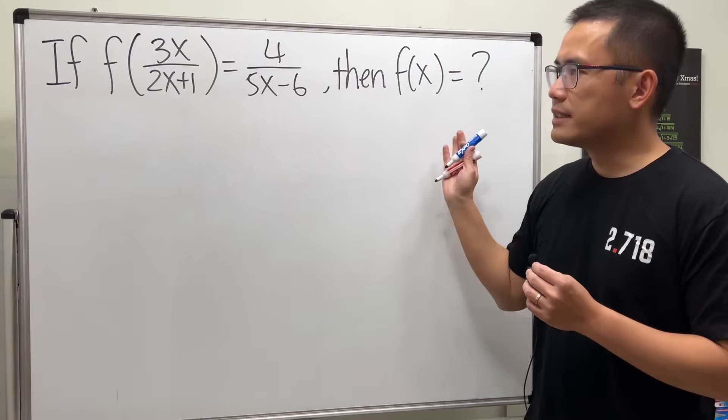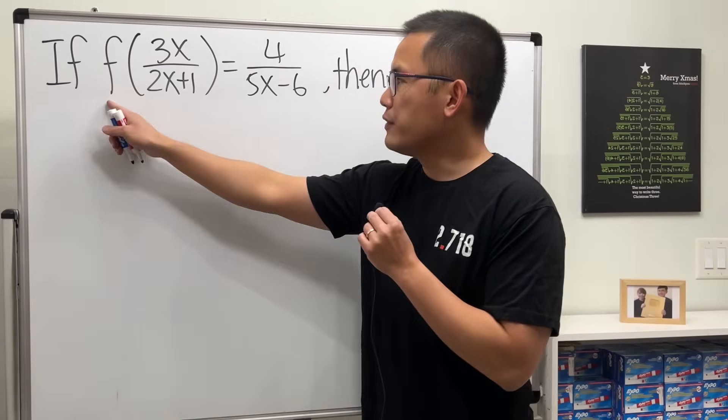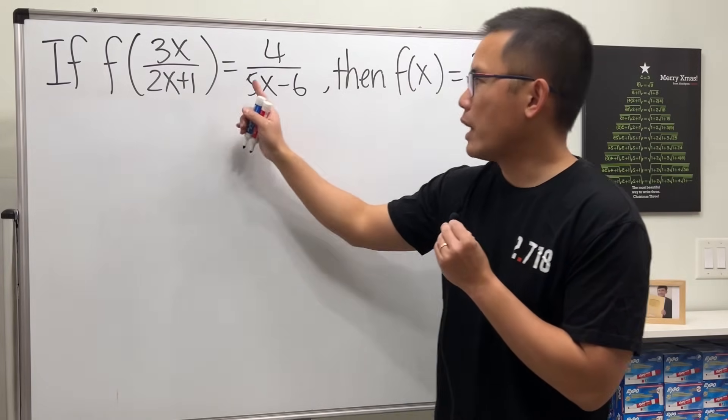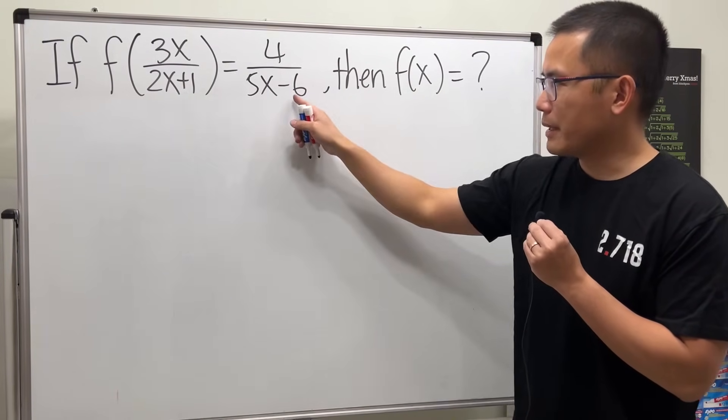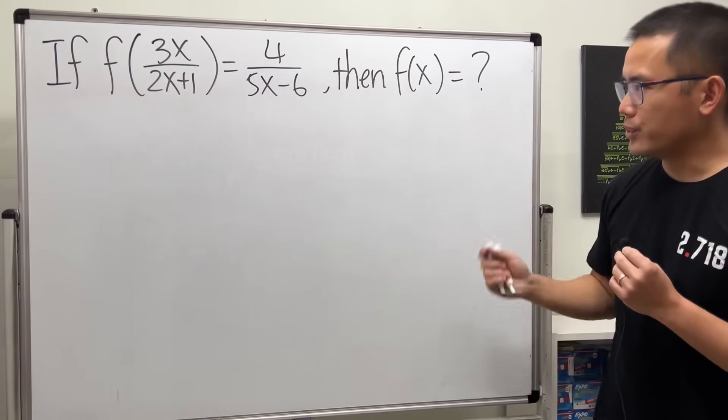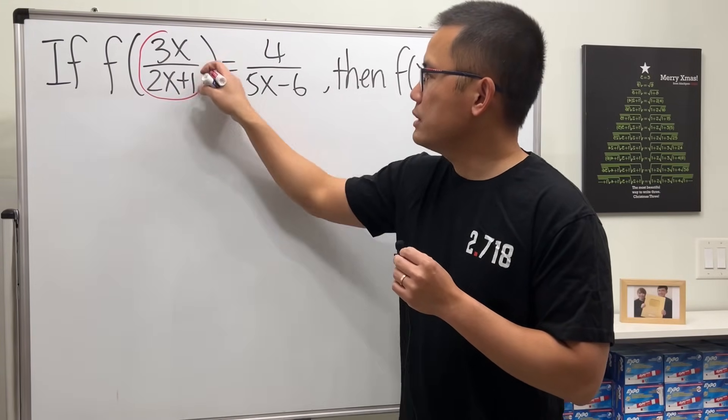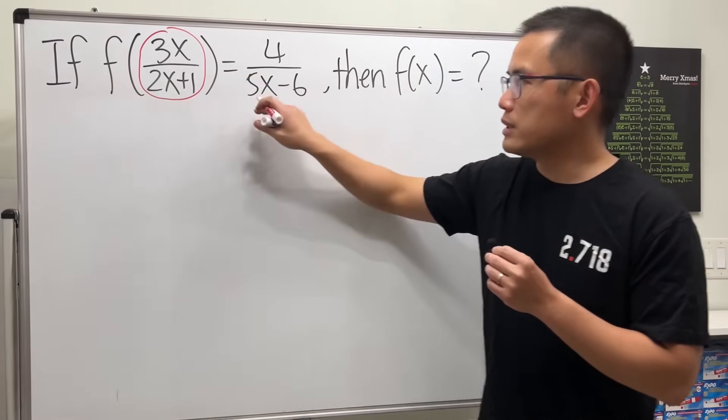I wanted to show you how to solve this kind of question for your pre-calculus class. We have if f of 3x over 2x plus 1 equals 4 over 5x minus 6, then we would like to know what f of x is equal to. The key to do this is to notice we have this input for the function, and right now we are trying to end up with just an x inside.